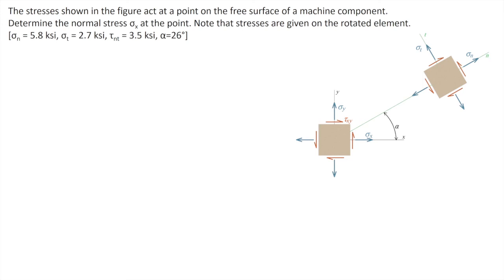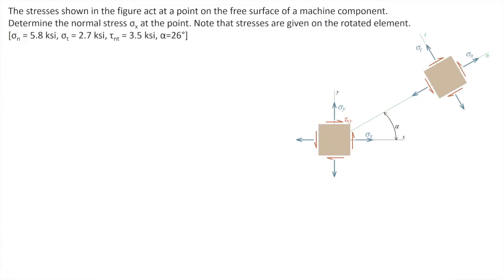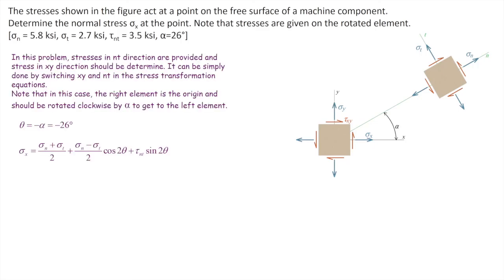In the second problem, stresses are given on the n and t plane and we want to determine the stress on the original x-y plane. One approach would be solving a system of three equations with three unknowns for sigma_x, sigma_y, and tau_xy — but that is difficult. Instead, we can assume the n-t plane is the original plane and rotate back to x-y. Instead of rotating by angle alpha, we rotate by negative alpha. That's it.